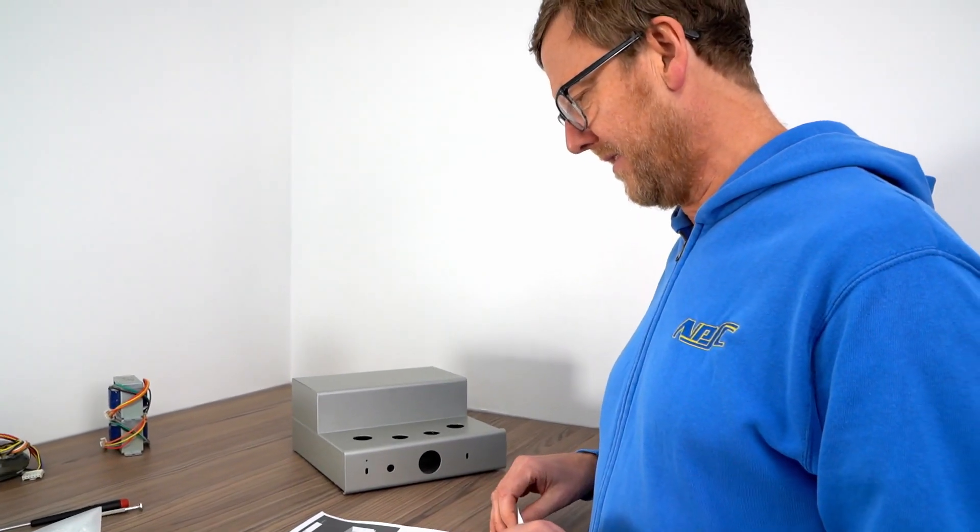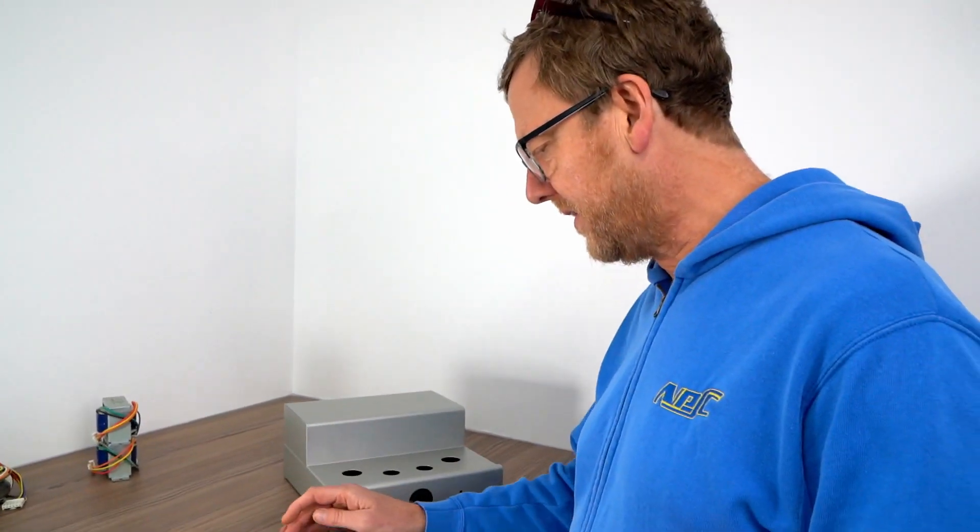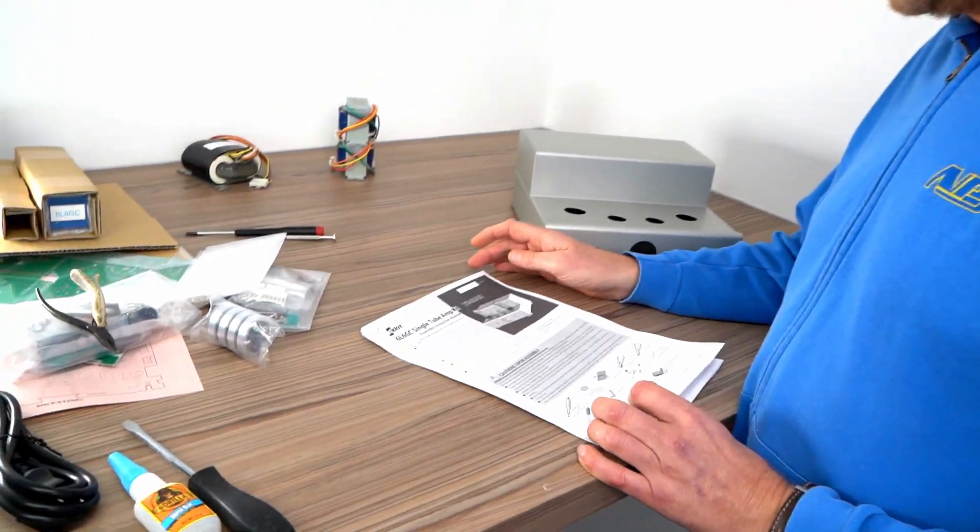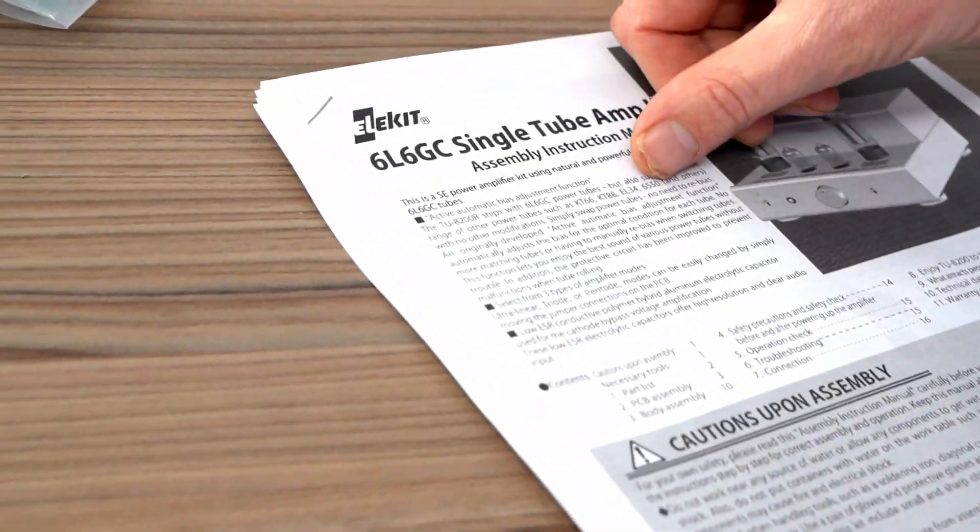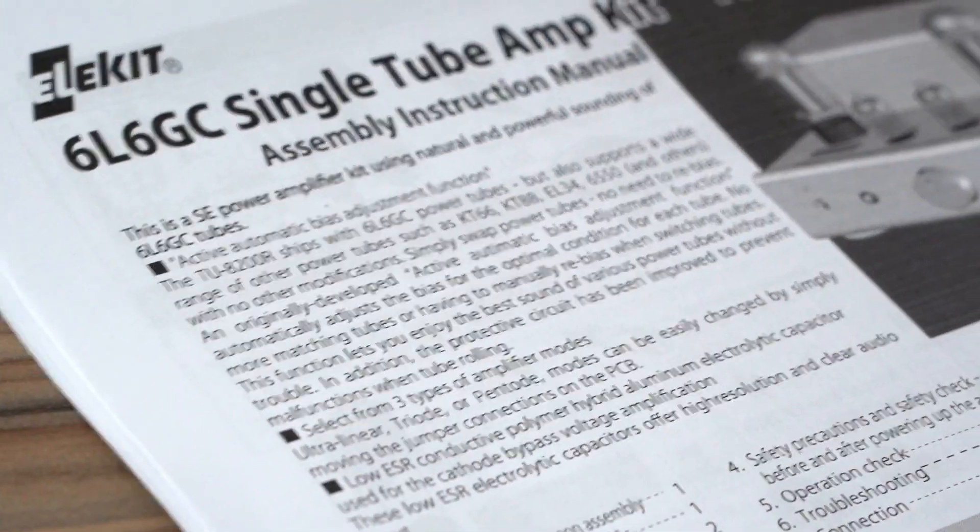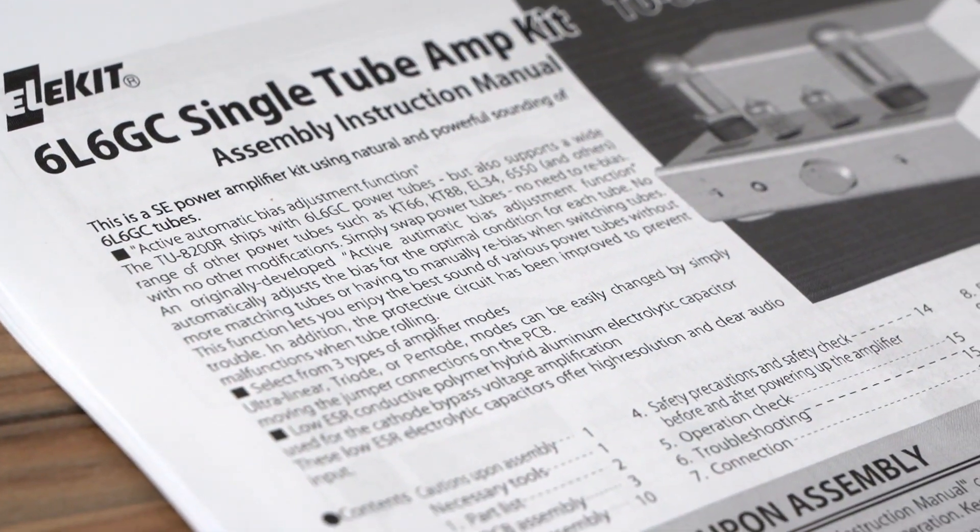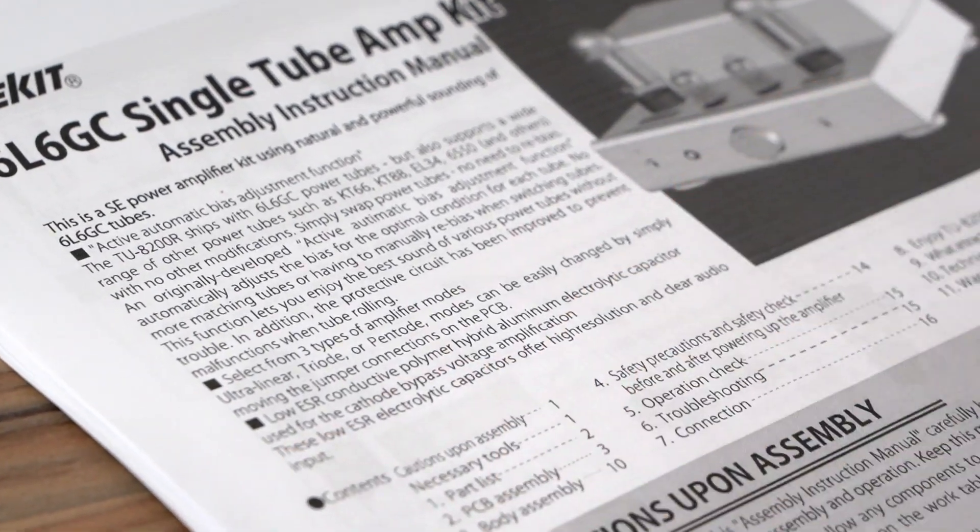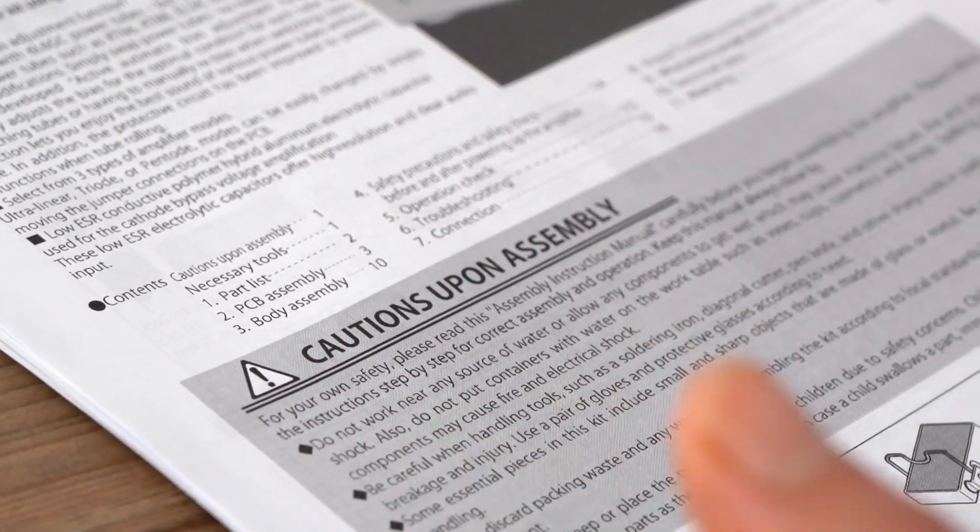Part two. So I printed out the instructions in English now. I can't actually read Japanese, but this is great. It gives you a brief description of the kit and talks about its autobias feature, which basically means you can just swap tubes around. It gives you an idea of the kind of stuff you need to make the kit.